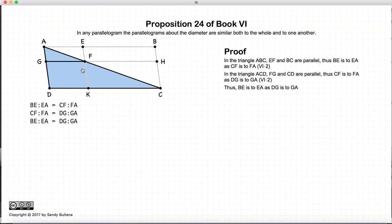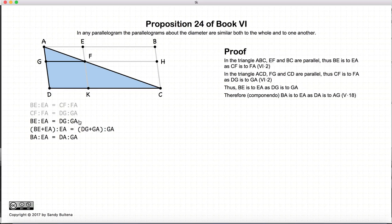So let's look carefully, that is BE to EA is equal to the ratio of DG to GA. Now if we use the proposition that's called componendo, Proposition 18, Book 5, we can take BE plus EA compared to EA will also be equal to DG plus GA to GA. This right here is a consequence of Proposition 18 of Book 5.